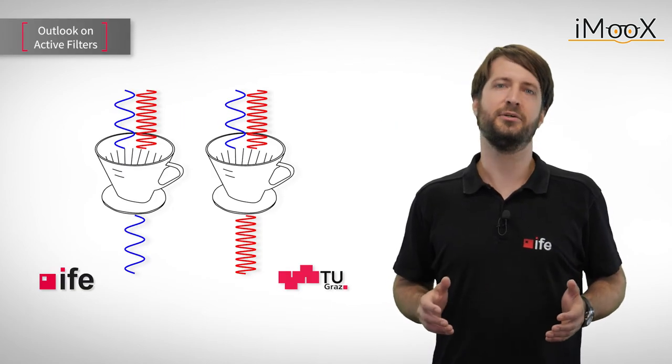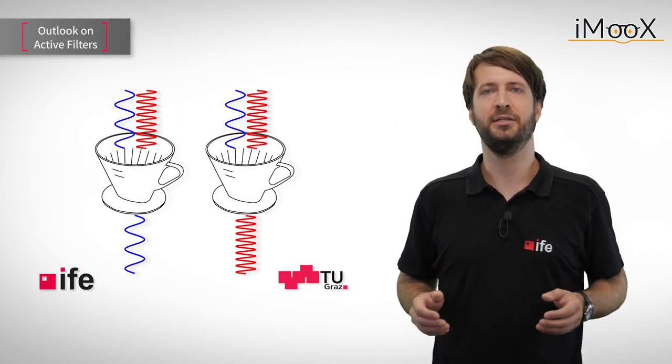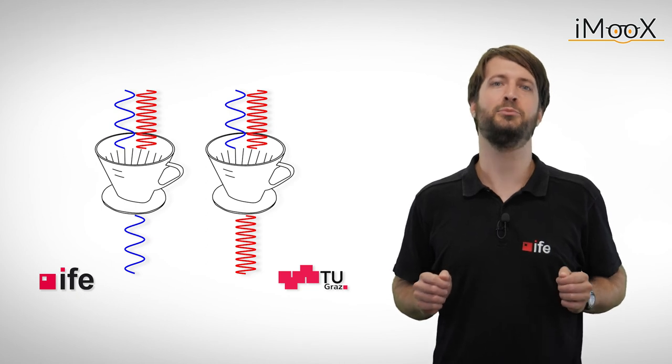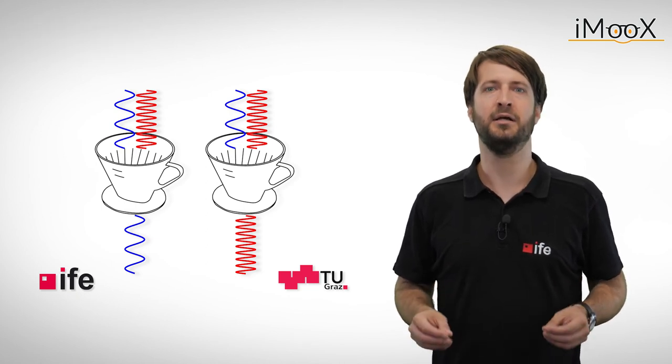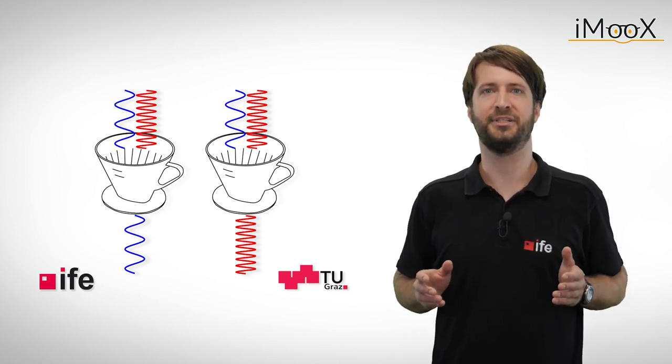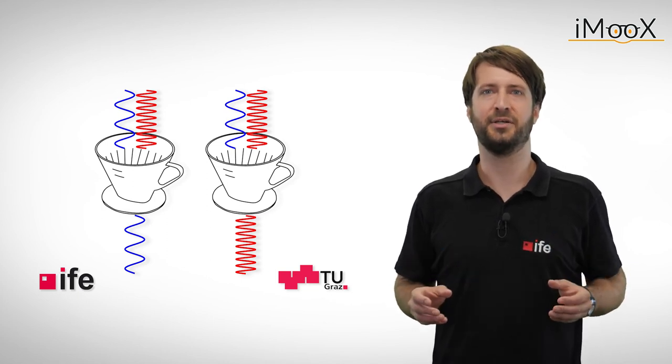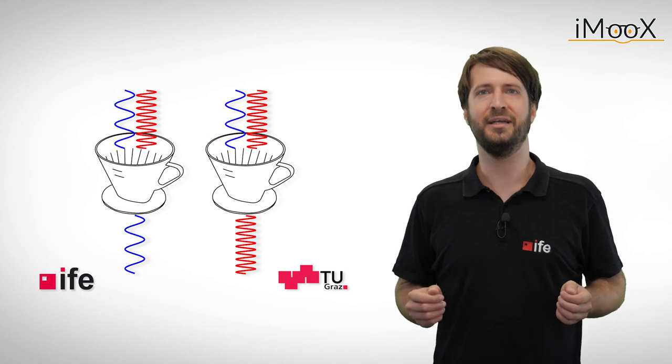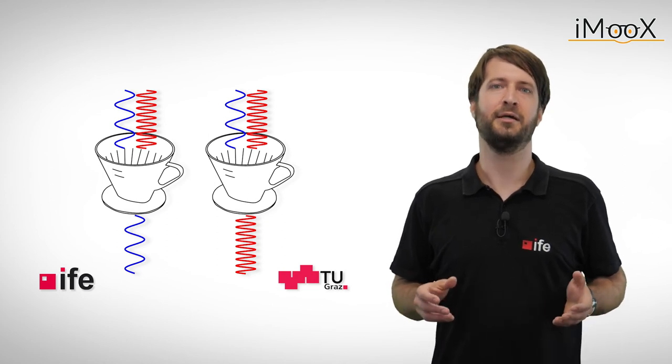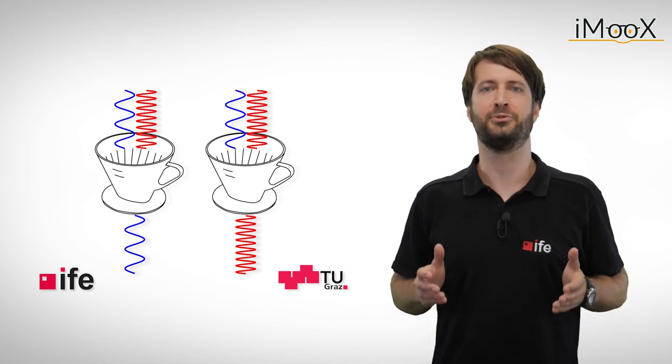If you have seen our videos about amplifier circuits, you can now try to build such an AM receiver by yourself. All you need is a long wire for the antenna and some basic elements, like an adjustable capacitor, an inductor, a diode, some resistors and either a transistor or operational amplifier.